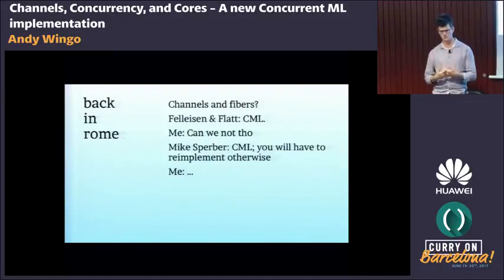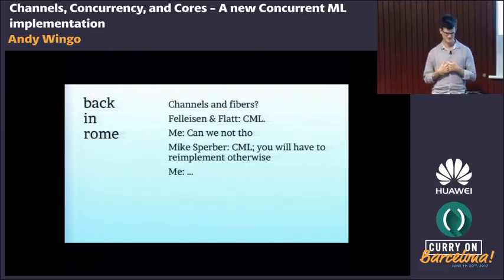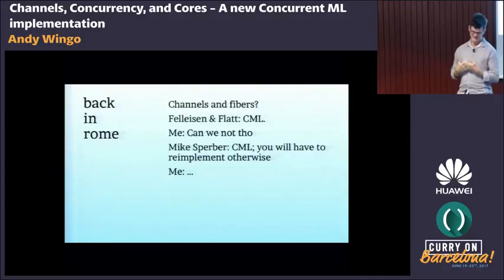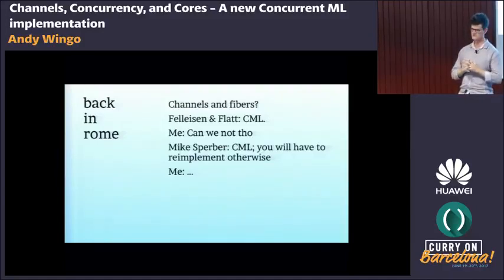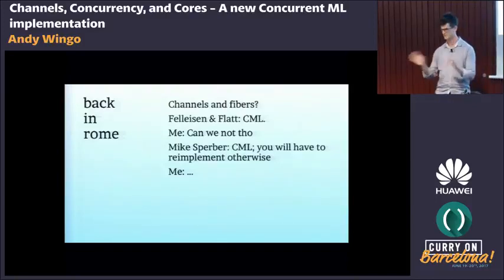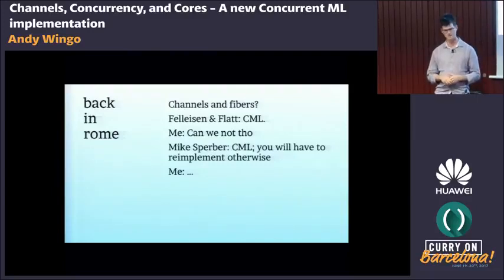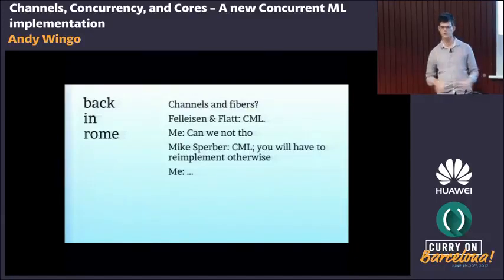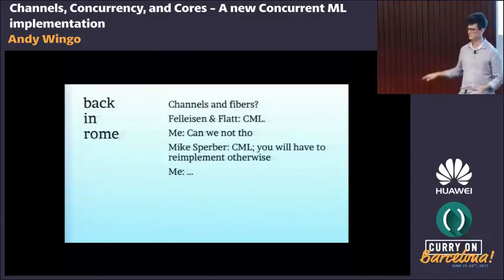They said no. Matthias Felleisen said something quite pointed about Go — that the designers of Go made a mistake, that CML is the right abstraction to use, and that's what I should implement. That looked like a lot of complication to me. Mike Sperber was also there and agreed: he'd had to re-implement things on top of CML as well. All the sages were saying this is the thing you have to do.